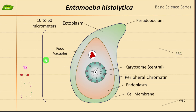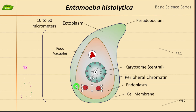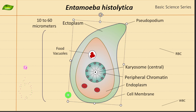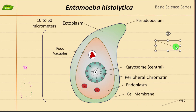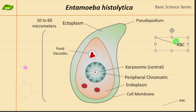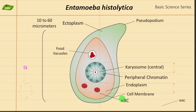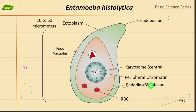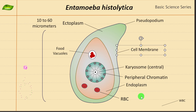Next is the RBC. You might ask where red blood cells come from inside this organism. This particular organism causes disease — it is able to cause disease in humans. So it can phagocytize, it can eat up RBCs and utilize them as a nutrient source. Here are the RBCs labeled in the illustration — these are the two RBCs we have.